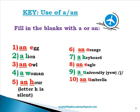The key is on the screen: an egg, a lion, an owl. An egg — because 'e' is a vowel. A lion — because 'l' starts with a consonant. An owl — similarly. A woman, but an hour. This is very important: 'hour' is pronounced with a silent 'h'; 'h' is silent there, and 'o' is a vowel sound. So the correct article is 'an' there. Although it starts with 'h' (a consonant), we pronounce it starting with 'o', so we use 'an'. Then: an orange, a keyboard, an eagle.